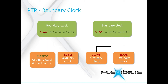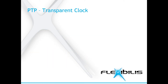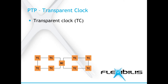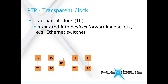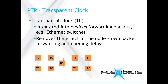Here is a picture of the structure between slaves, masters, ordinary and boundary clocks. One part of a boundary clock is in slave mode and the others in master mode. A BC gets its time information from a master clock. Transparent clocks are integrated into devices that forward packets in the network, for example Ethernet switches. By modifying PTP messages as they pass through the device, a transparent clock removes the effect of the node's own packet forwarding and queuing delays. All the switches in an Ethernet network should be transparent clocks or boundary clocks if they are located between network segments. A node can also be both a transparent clock and a slave or master clock at the same time.